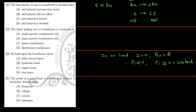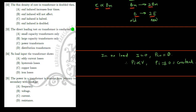If the flux density of the core in the transformer is doubled, since the EMF induced is directly proportional to flux density Bₘ, if Bₘ is doubled then the EMF induced is also doubled — from E to 2E.